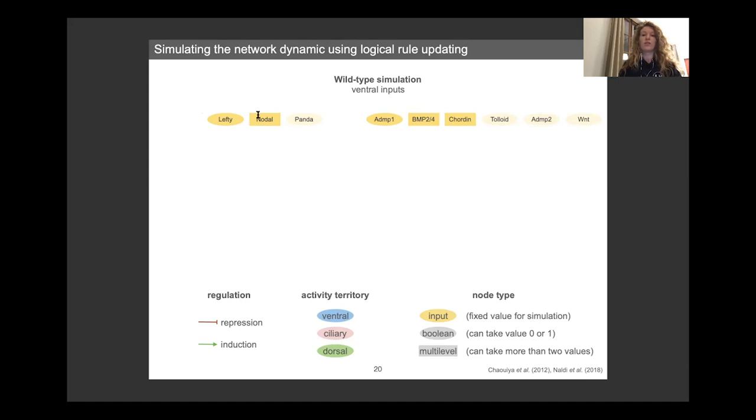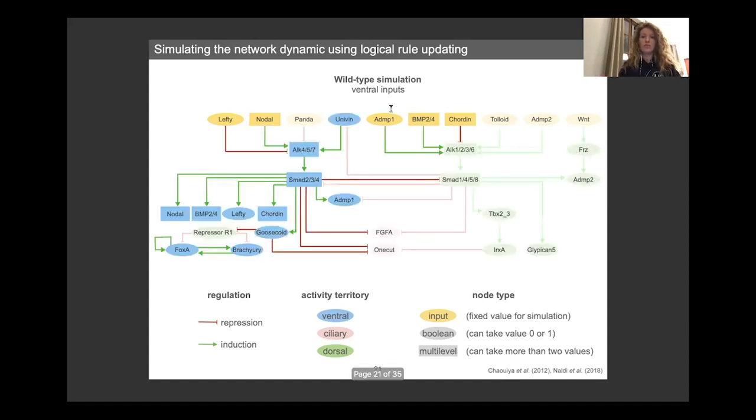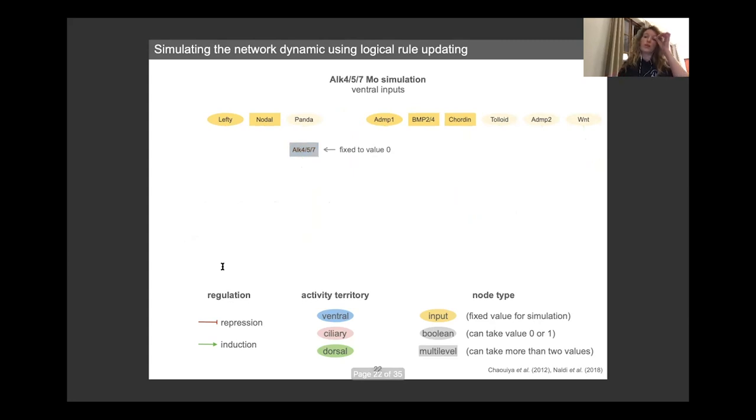if we activate the nodes that correspond to ventral signaling, so having these two and these three nodes active, and we simulate the model, we can propagate those rules across the downstream nodes and end up in a stable state. And you can see here, with this configuration of input nodes, we have all the ventral nodes that get activated, and the final stable state corresponds to a ventral simulation.